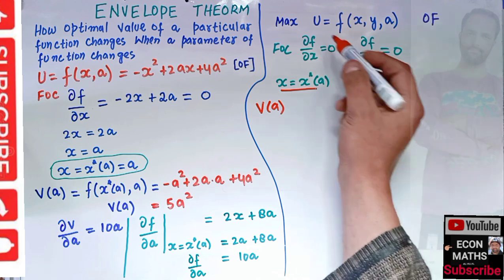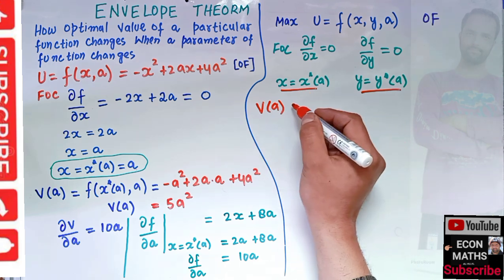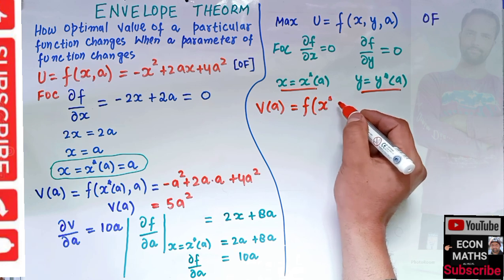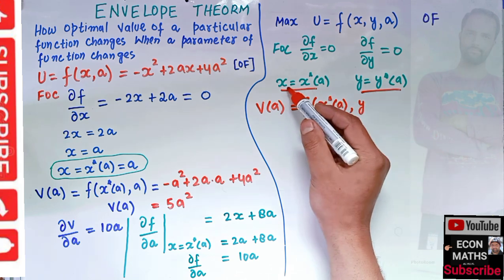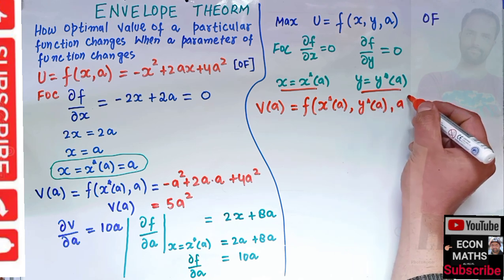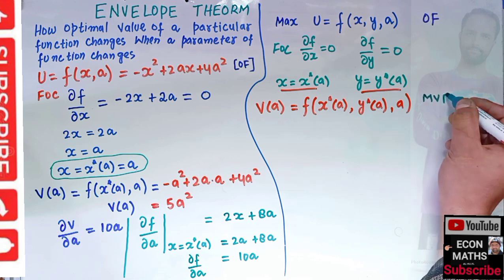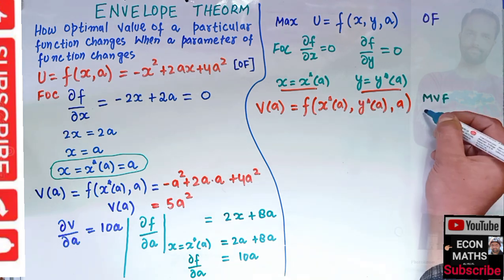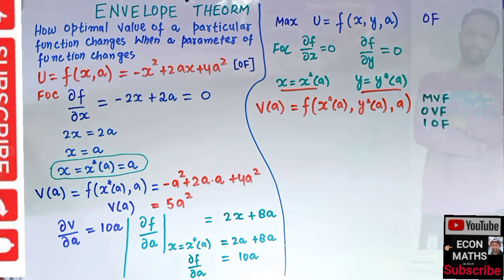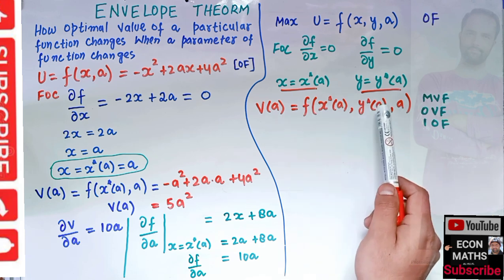Substituting x-star(a) and y-star(a) back into the objective function gives us the maximum value function V(a), which equals f(x-star(a), y-star(a), a). This is also called the optimal value function or the indirect objective function.